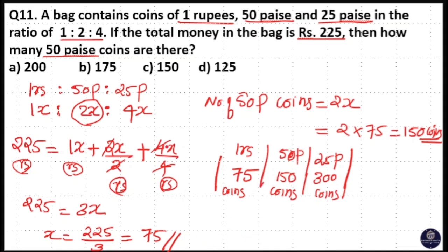If you want to know the amount of money, that is: 75 one-rupee coins means 75, 150 fifty-paise coins means 150 divided by 2. 300 coins of 25 paise means 300 divided by 4, that equals 225.